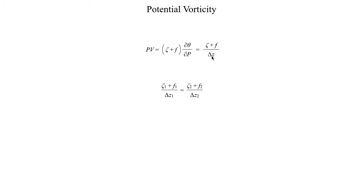Since potential vorticity is a conserved quantity, that means we can invoke a conservation rule: the potential vorticity before must equal the potential vorticity afterwards. Breaking that down into individual terms, the absolute vorticity divided by the column depth before must equal the absolute vorticity divided by the column depth afterwards.